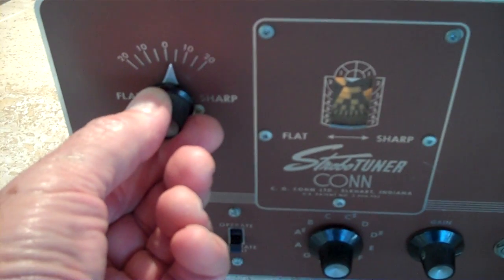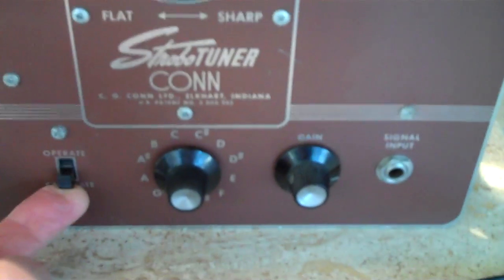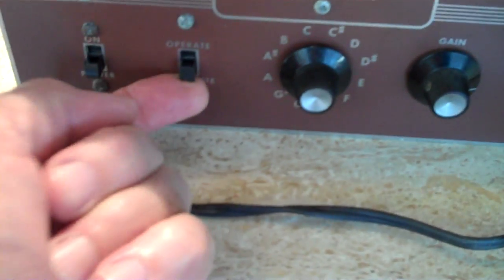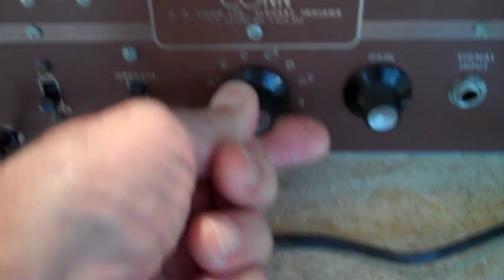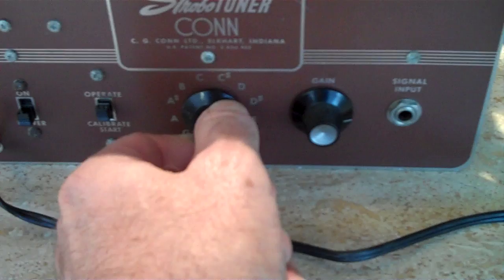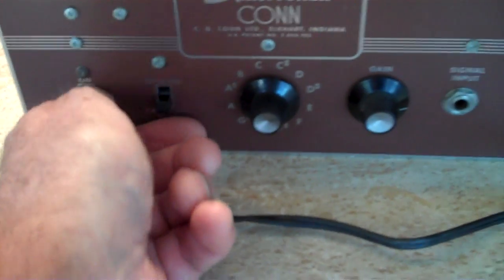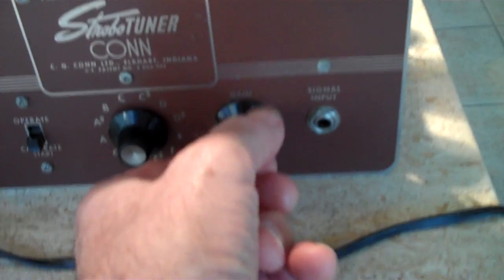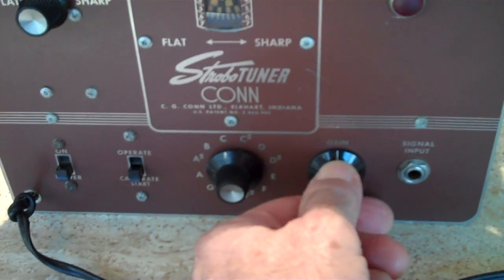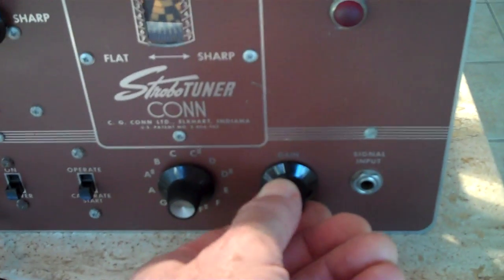It's calibration. This is calibrate down, operate up, every letter - D, D sharp, E - every note in the scale, on and off. And this is gain to adjust the signal so you get a good reading on the wheel.